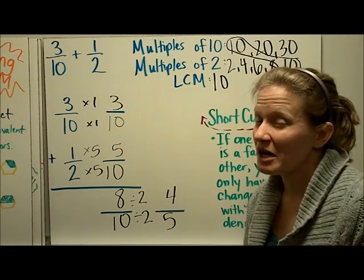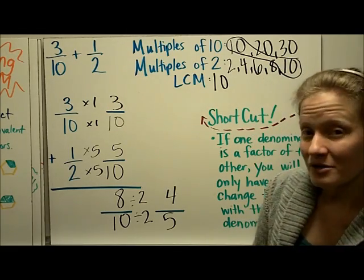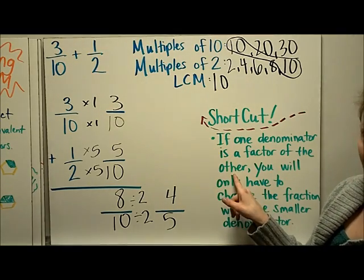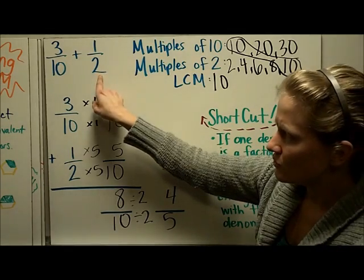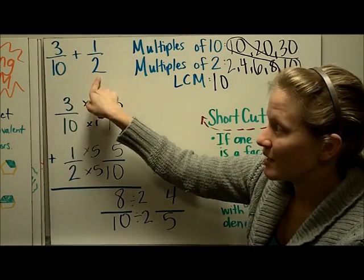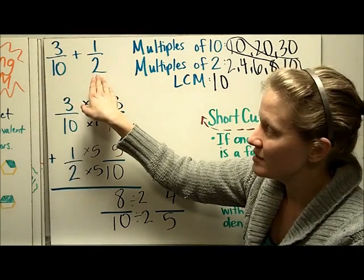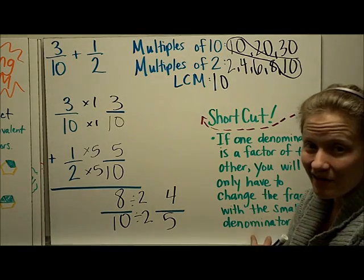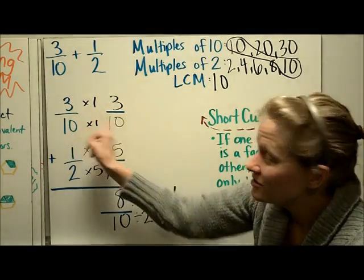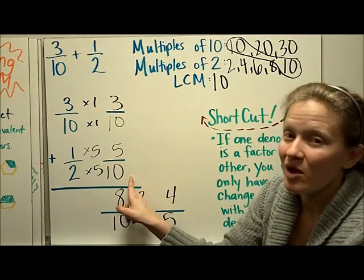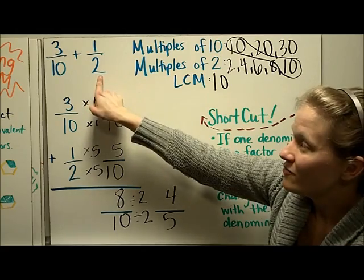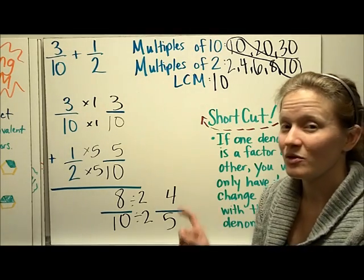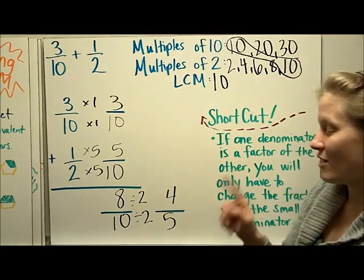There's a shortcut you can use: if one denominator is a factor of the other — for example, two is a factor of ten because two times five is ten — then you'll only have to change the fraction with the smaller denominator. We saw that happen here; I didn't have to change the three-tenths fraction. If one denominator is a factor of the other, you're only going to have to change one of the fractions.